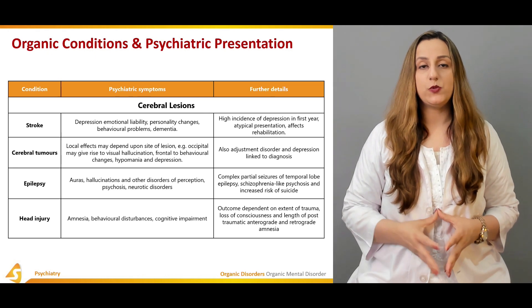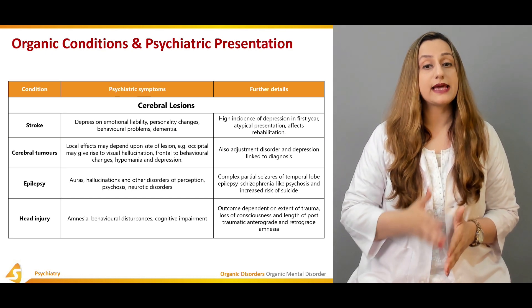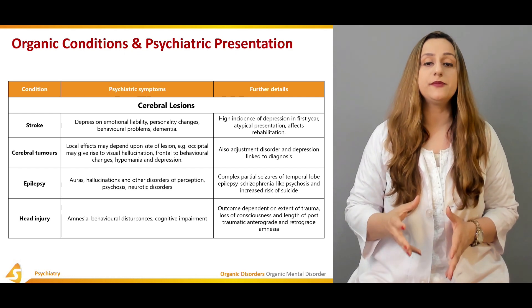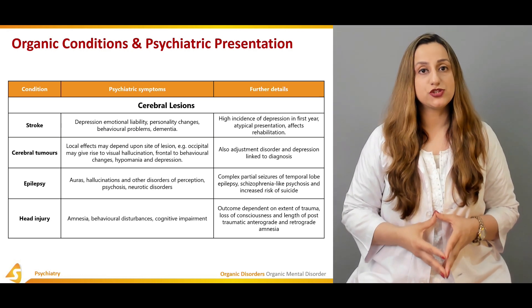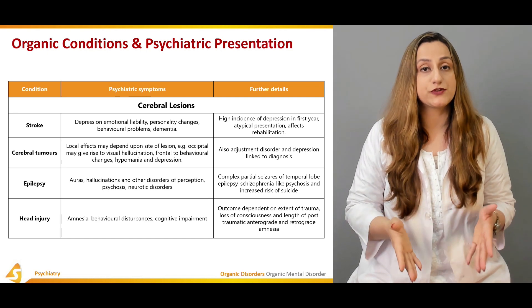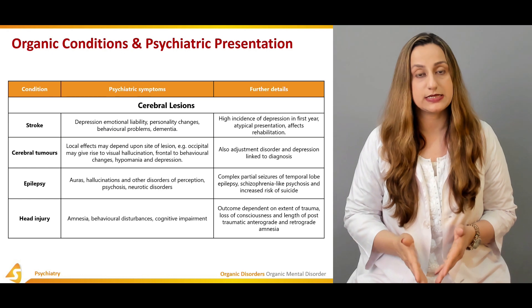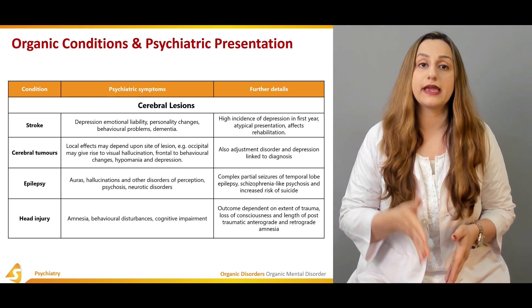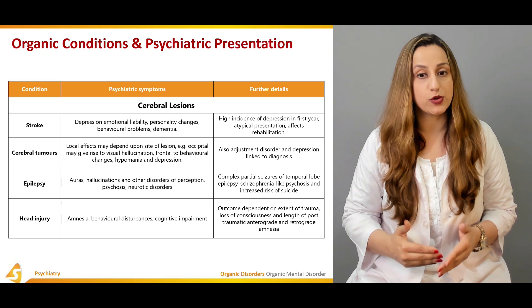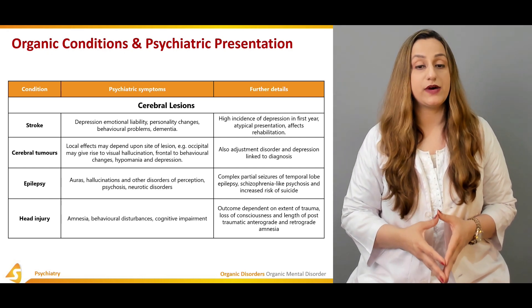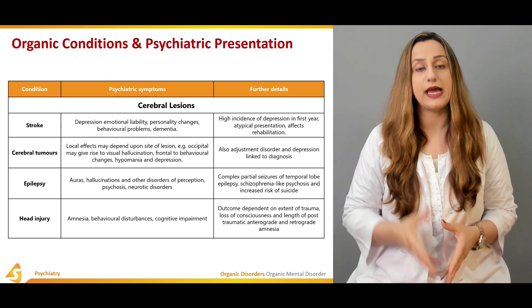In this table we summarize organic causes alongside their psychiatric symptoms. Patients with stroke can present with depression, emotional liability, personality changes, behavioral problems, and even dementias. As the picture shows, it can look like a psychiatric origin but investigations reveal stroke. There is a high incidence of depression in the first year, atypical presentation, and it affects the rehabilitation of the patient as well.